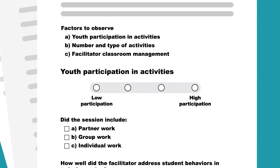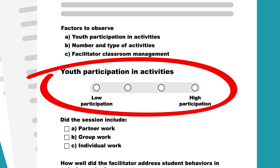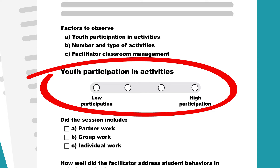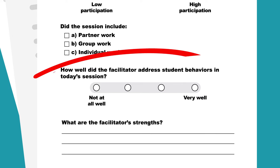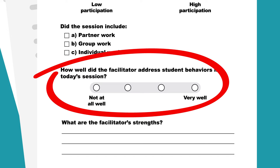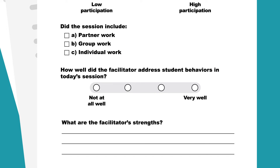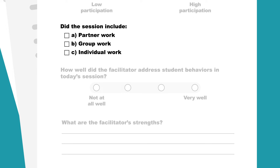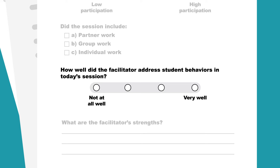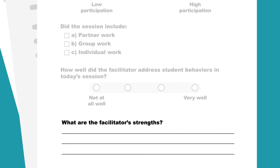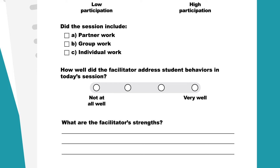For observations of facilitator quality, the observation form could focus on several factors, such as the extent to which youth participate in activities, the number and types of activities in a session, and facilitator classroom management. To help observers use the form, define each factor and its scale. The form should be easy to understand and use. It could include checklists to identify observed or missing activities during a session, rating scales indicating how well facilitators addressed certain topics, or free response items. It's also useful to provide space for observers to record notes.